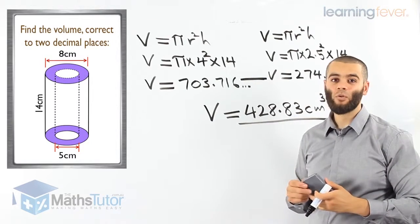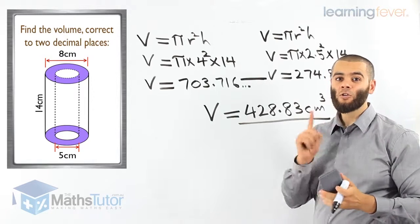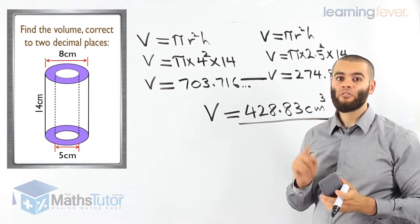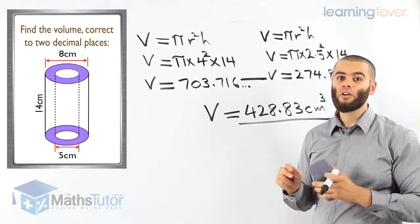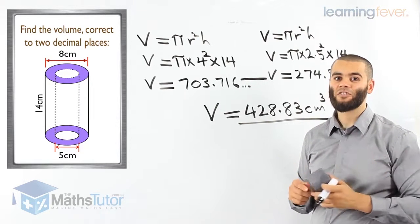This is how to work out the volume of a cylinder. Remember the formula: V equals pi r squared h.